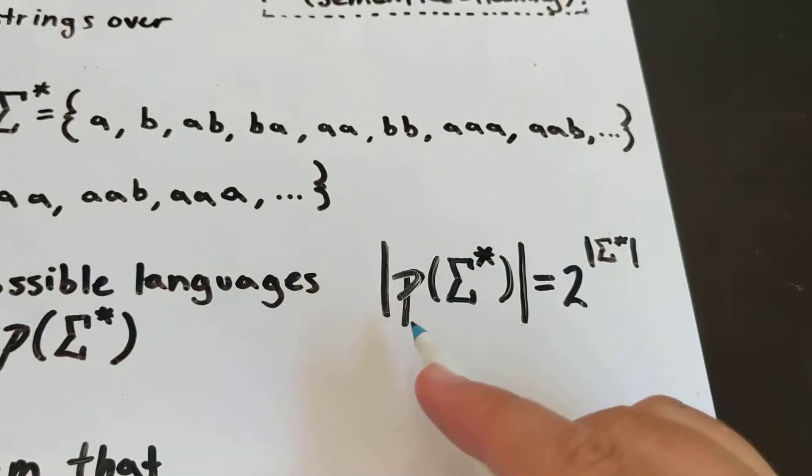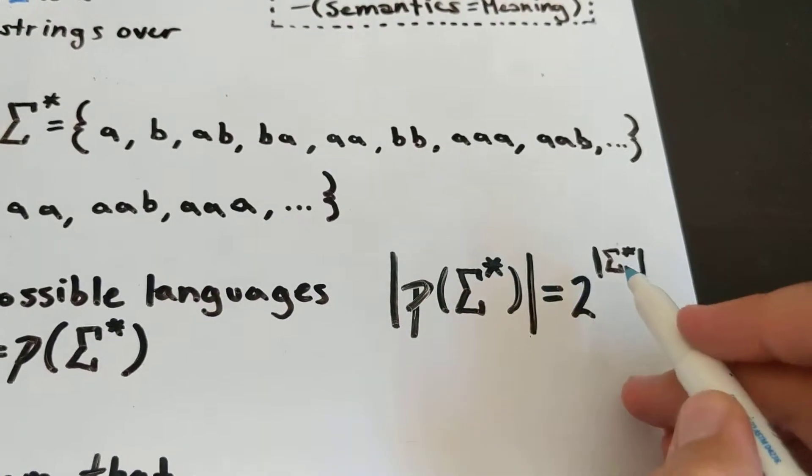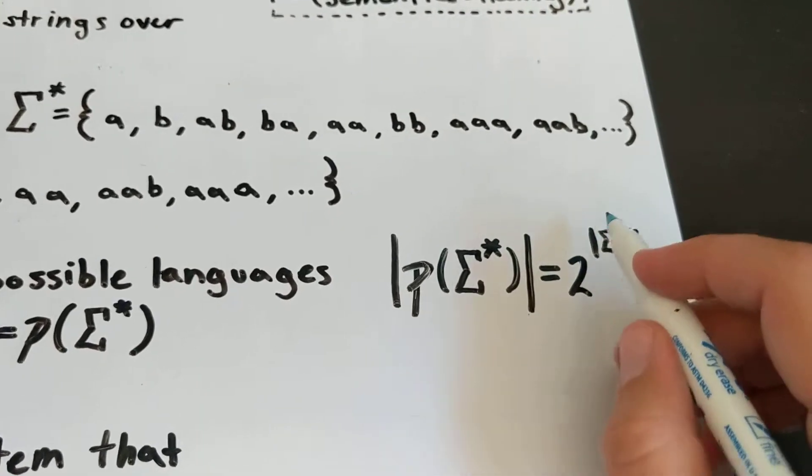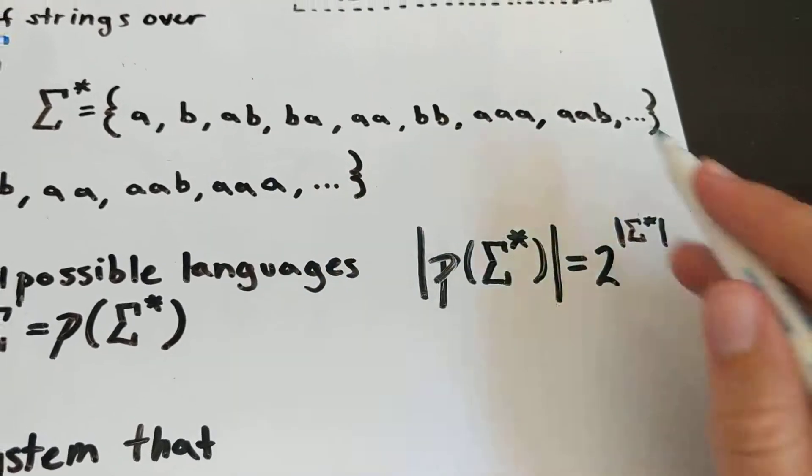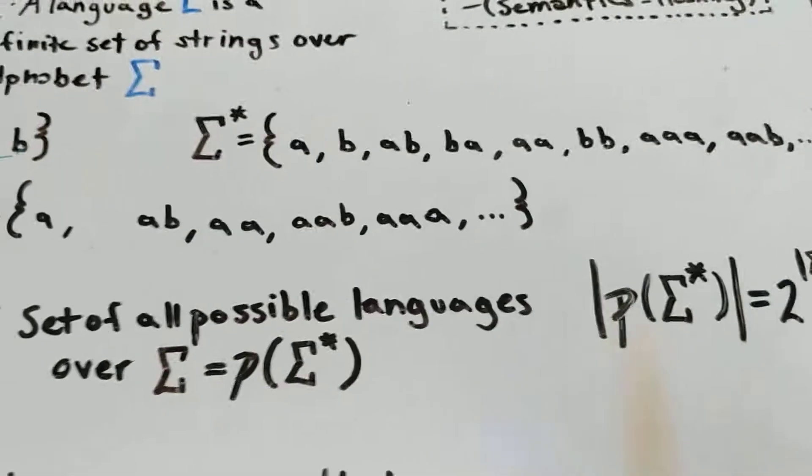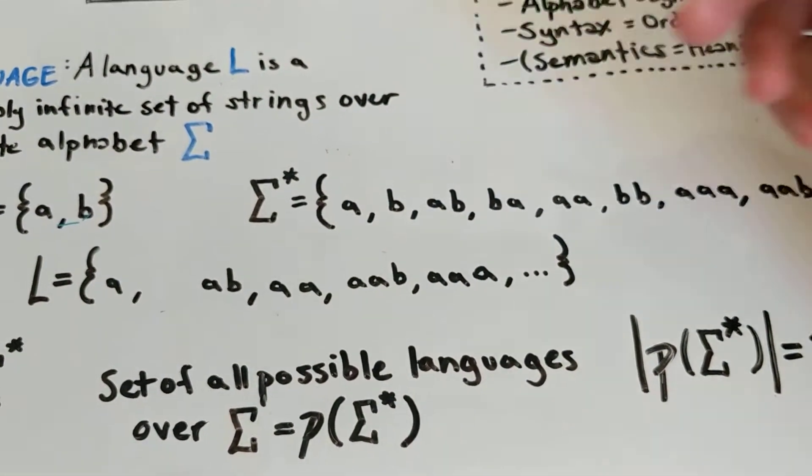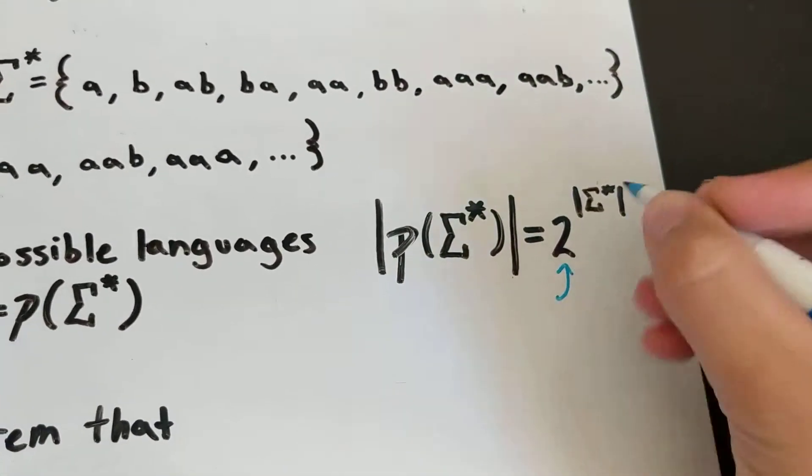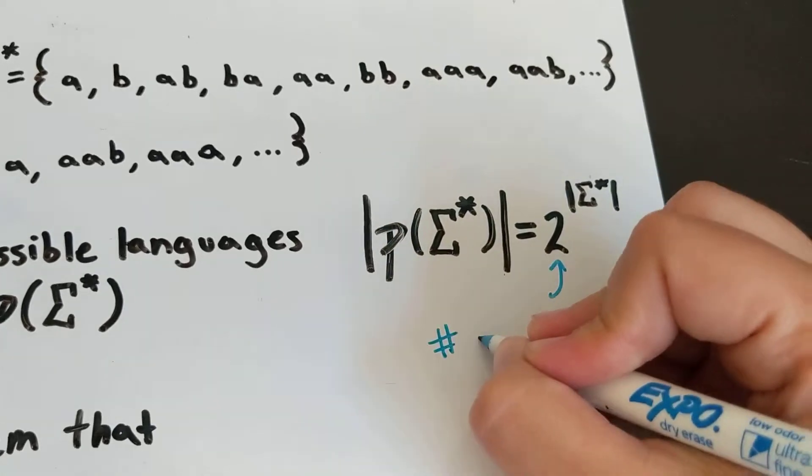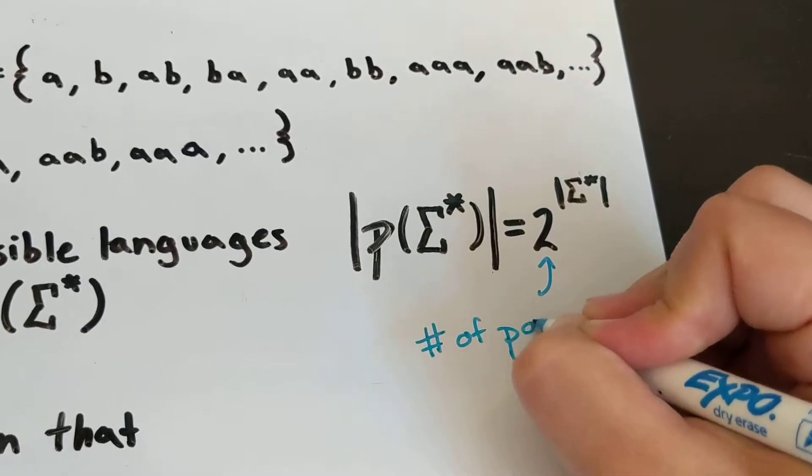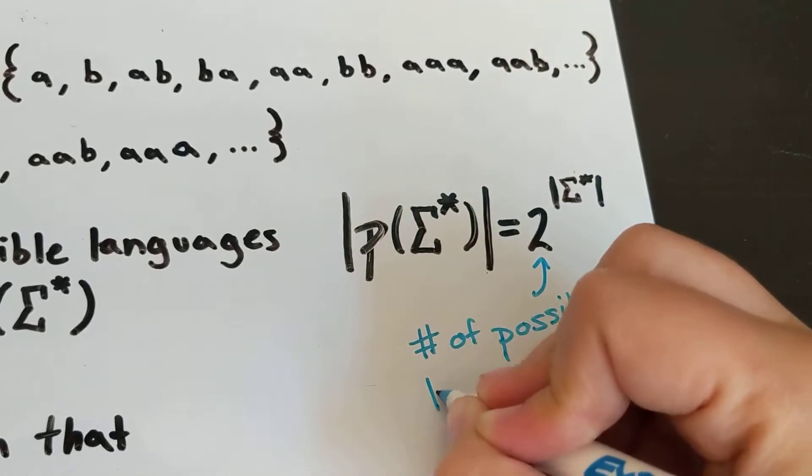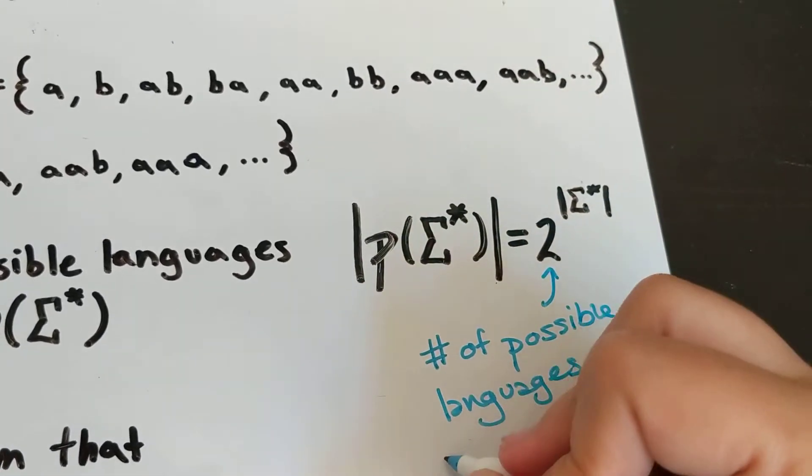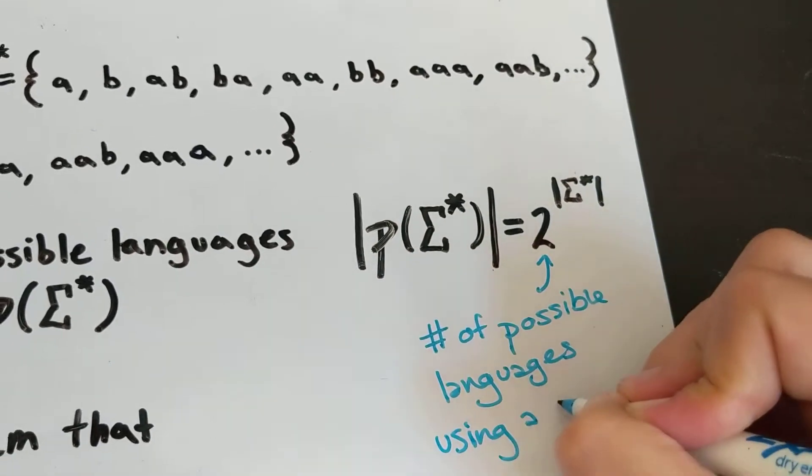And so you can give the size of this power set as 2 to the power of sigma, 2 to the power of the cardinality of sigma star. We're drawing all back our set theory stuff here. So that means that this is the number of possible languages using a given alphabet.